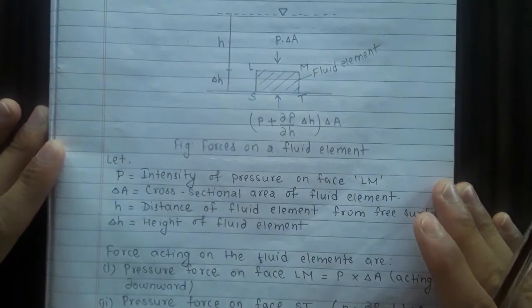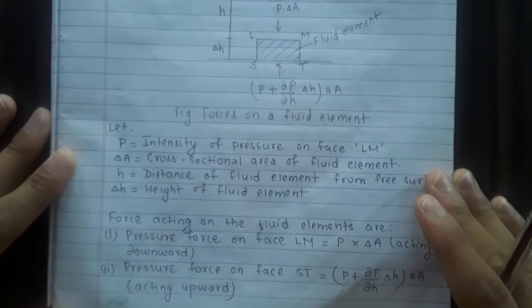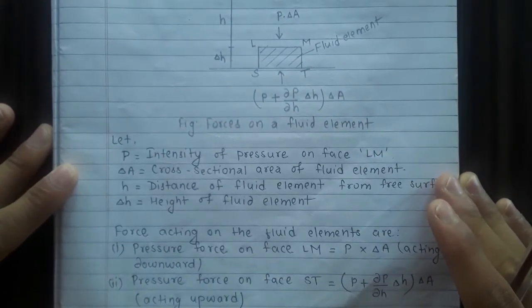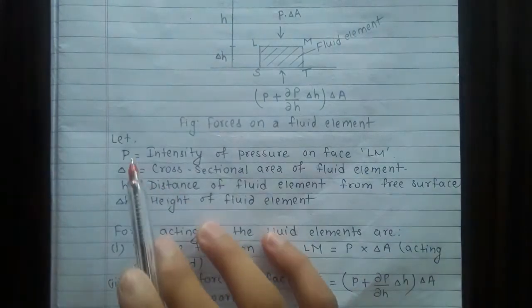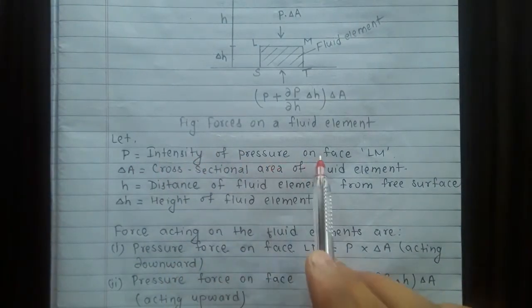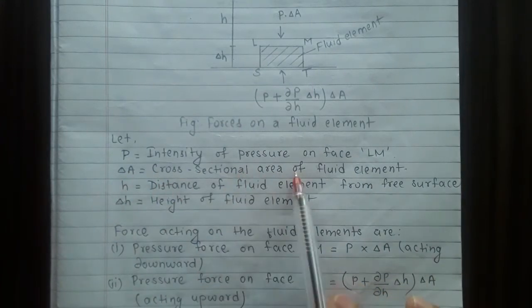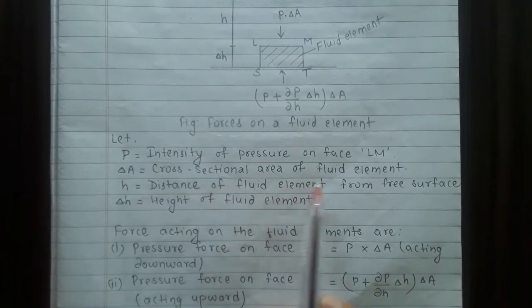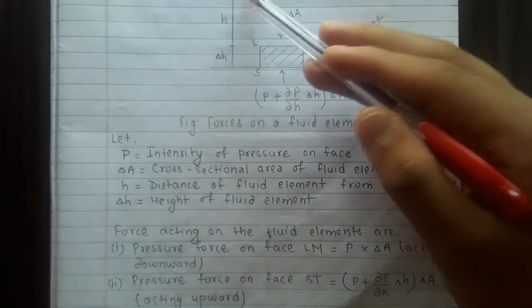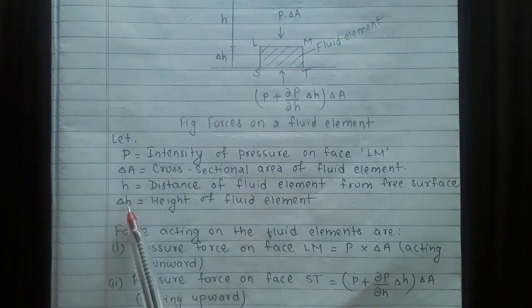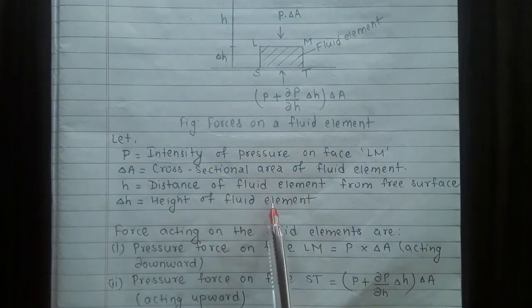Let P be the intensity of pressure on face LM, delta A be the cross-sectional area of fluid element, h be the distance of the fluid element from free surface, and delta H be the height of fluid element.